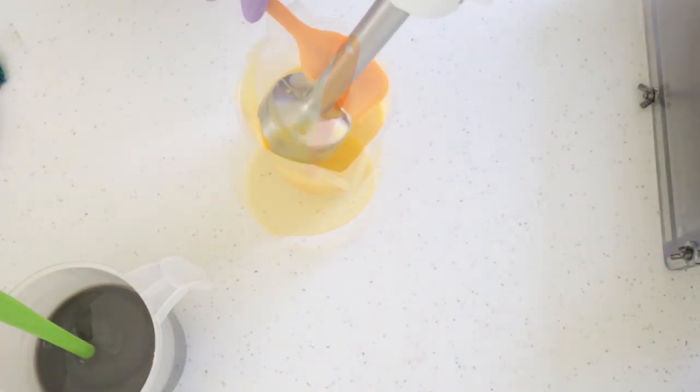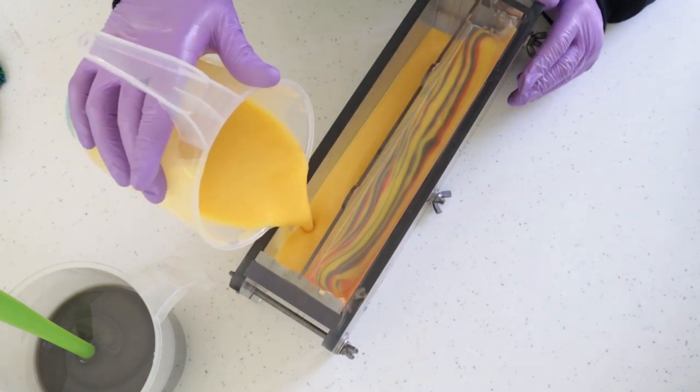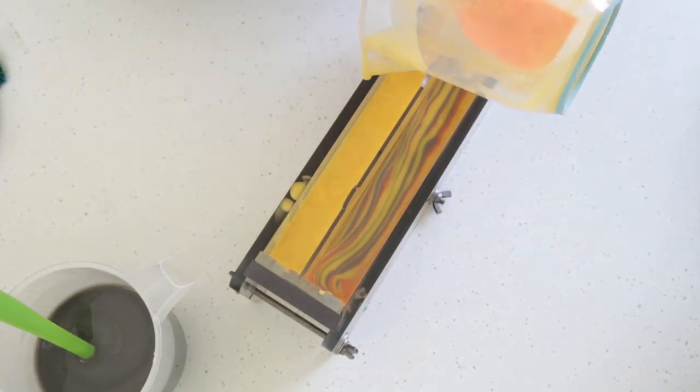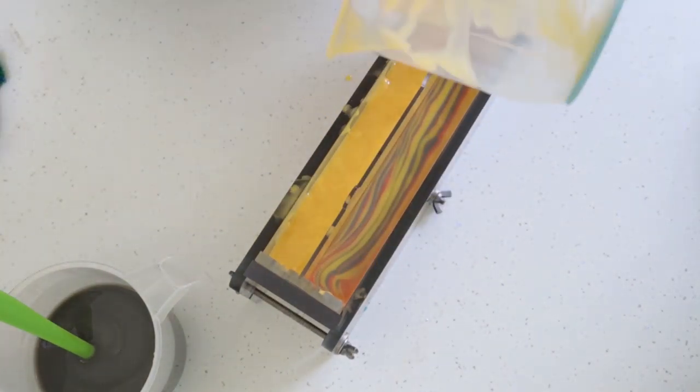I also made up a couple of extra small batches of soap, one in yellow and one in grey to help me form the rings of Saturn when I put it together.